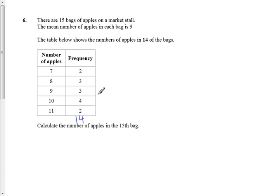So if I was going to find the mean from these number of bags, I would do 7 times 2, which is 14, 3 times 8 adds up to 24 apples, 9 times 3 is 27, 10 times 4 is 40.